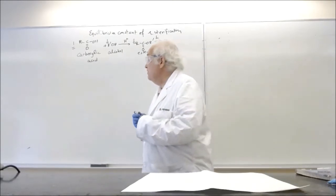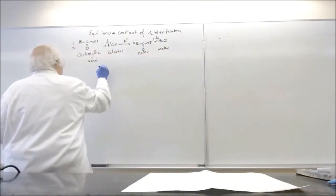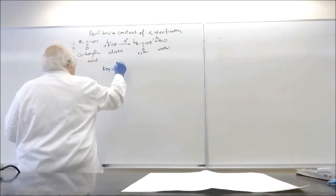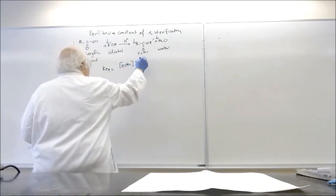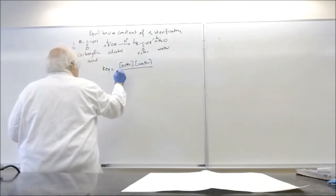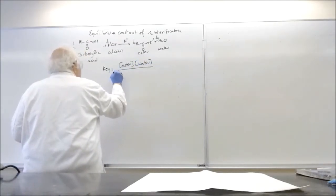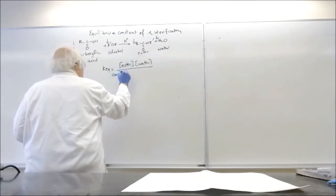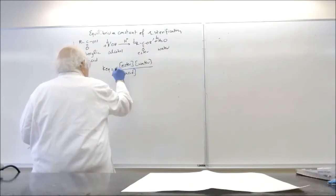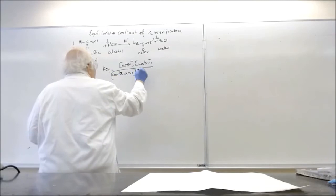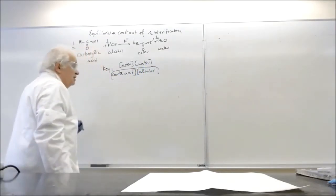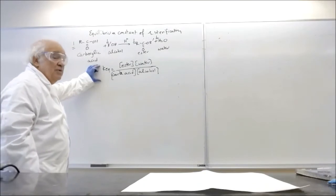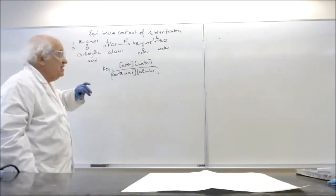So in this case, the K equilibrium will be equal to the ester times water over acid, carboxylic acid times alcohol. That is called a K equilibrium constant. It's a constant. This means the ratio will always be the same.